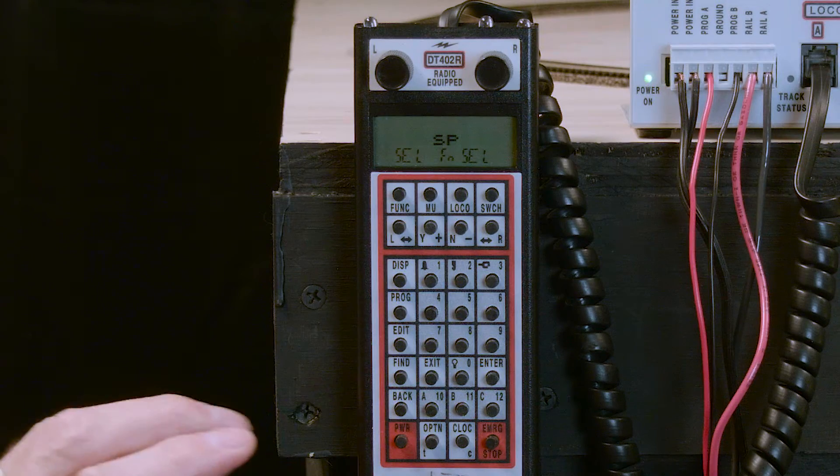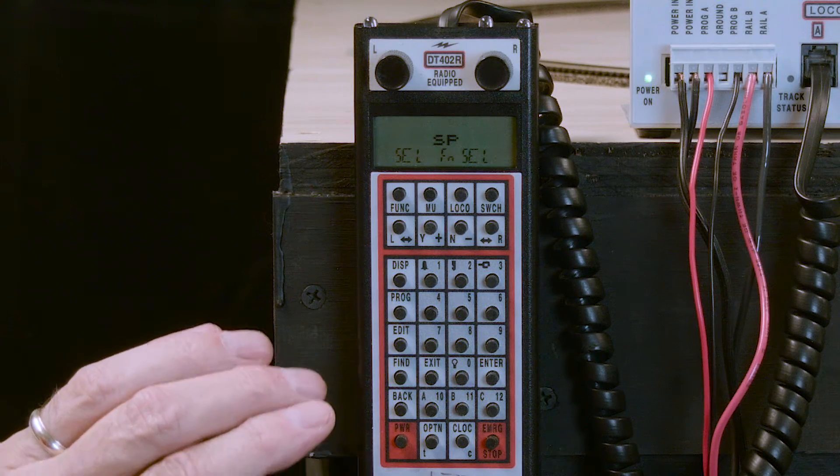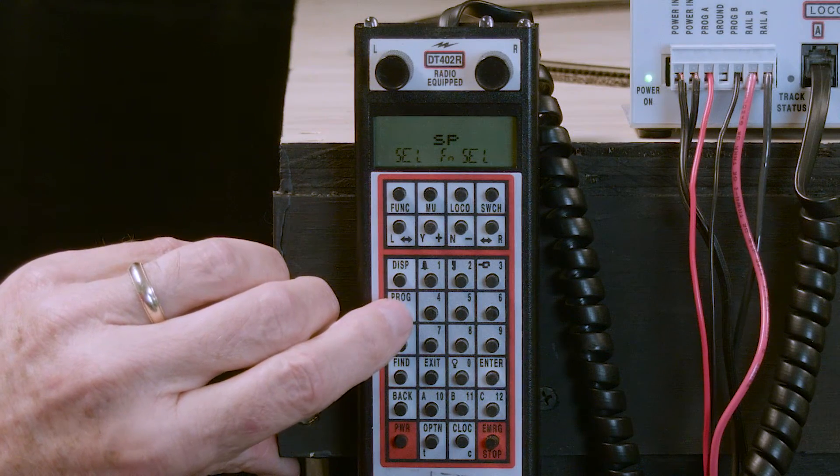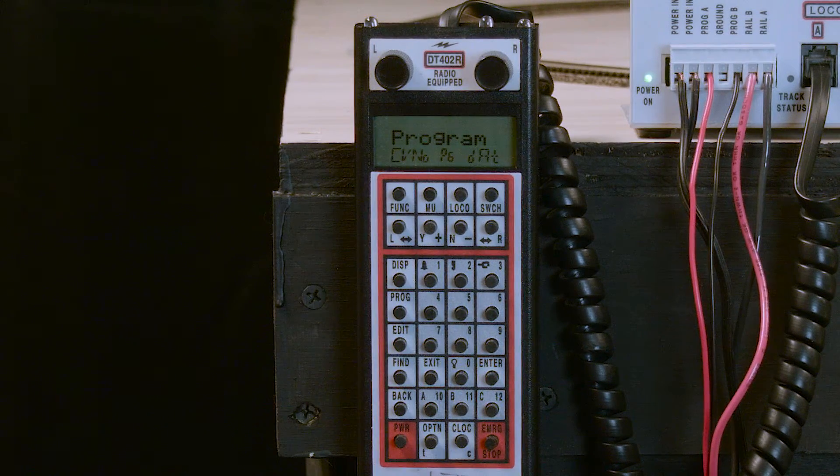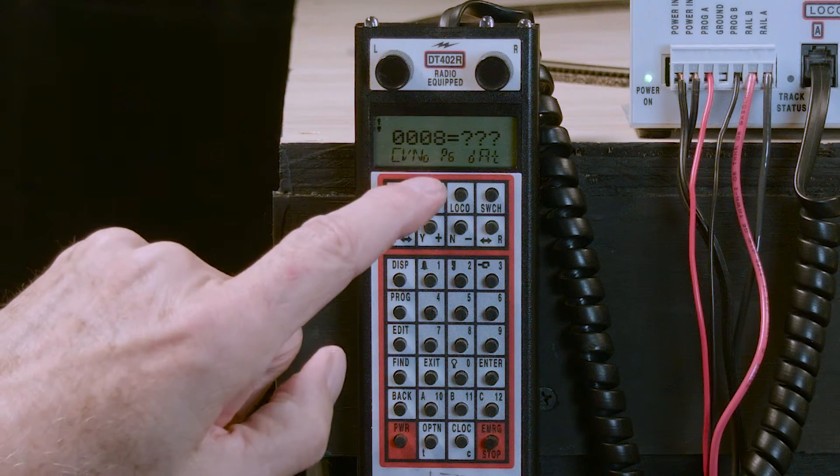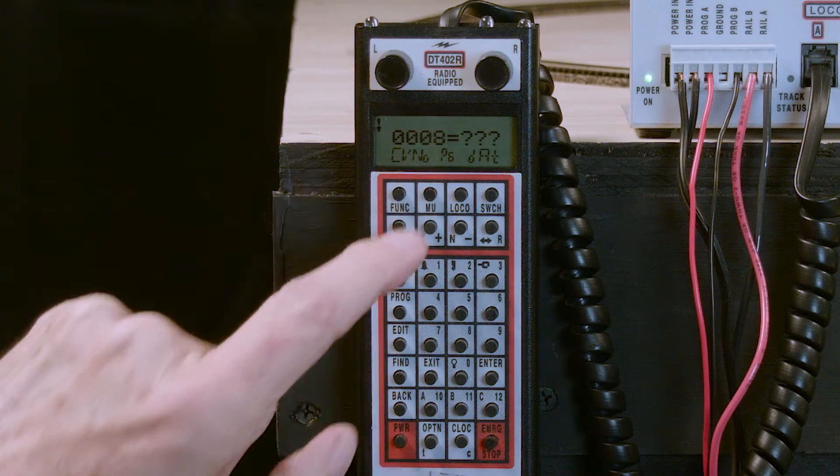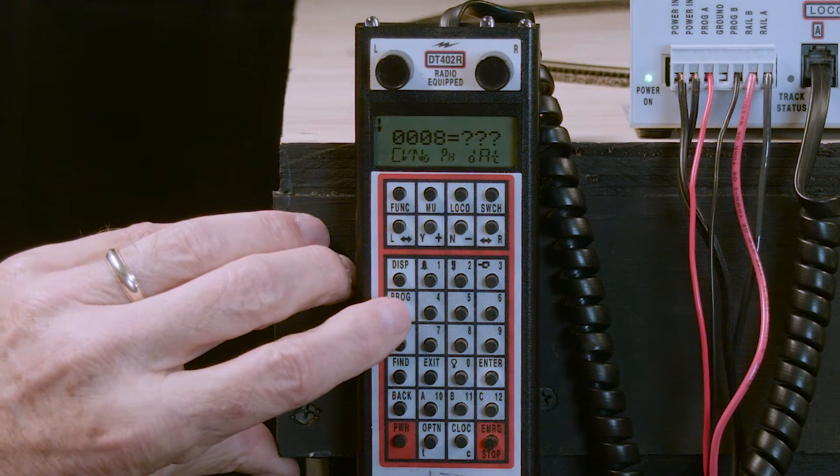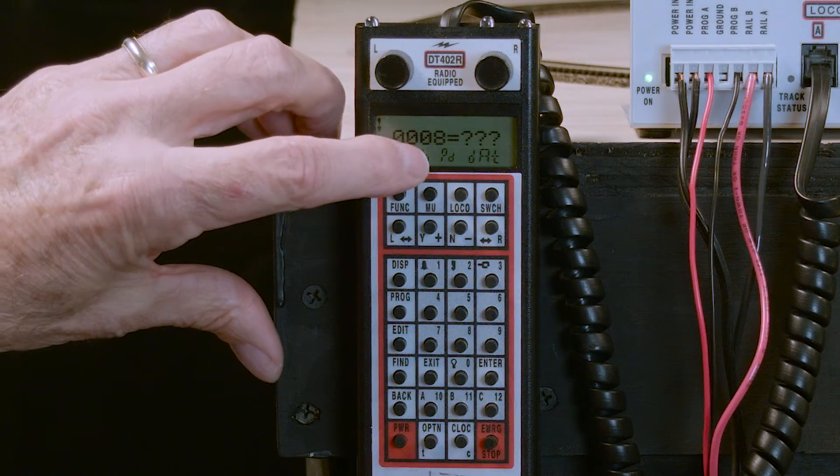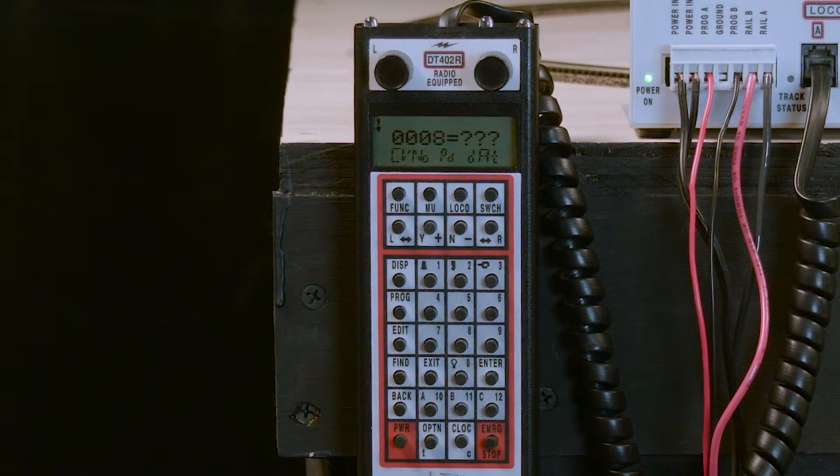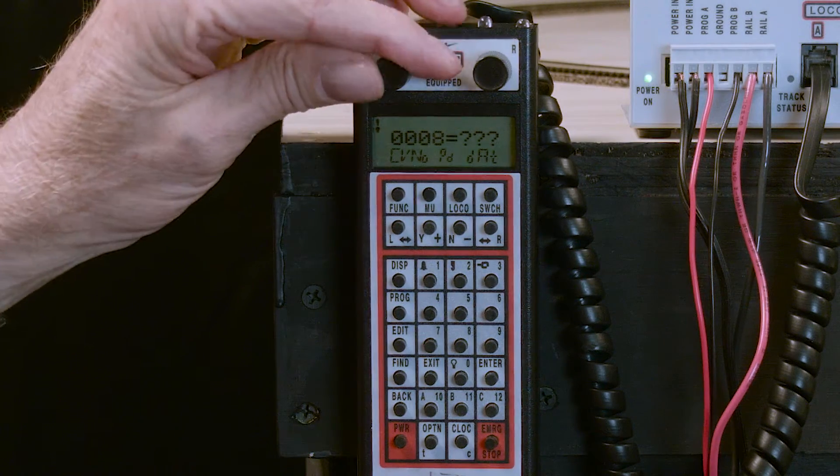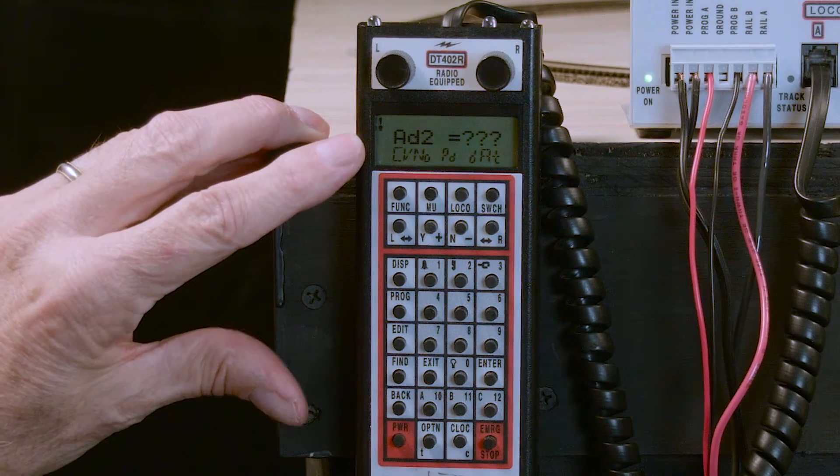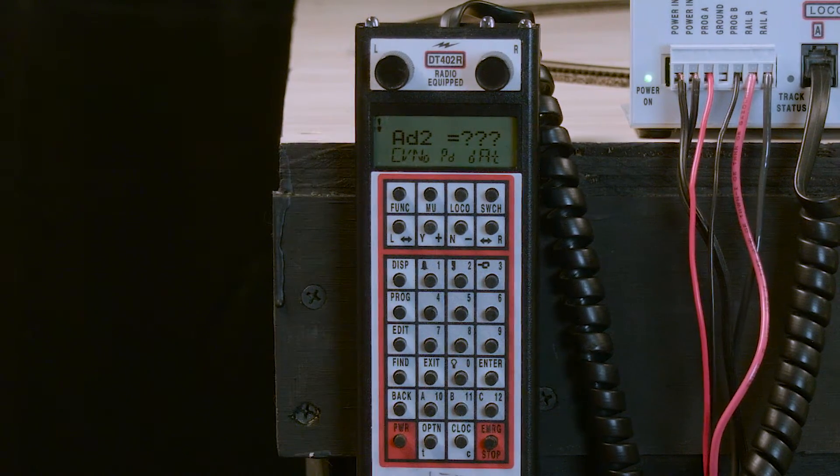And then we begin by pressing the program key on the DT402 throttle. That puts us in program mode and in this case PG. We're going to press program two more times to get PD and use direct mode programming in this case. We also get AD2 on the display so we have a fresh starting point.